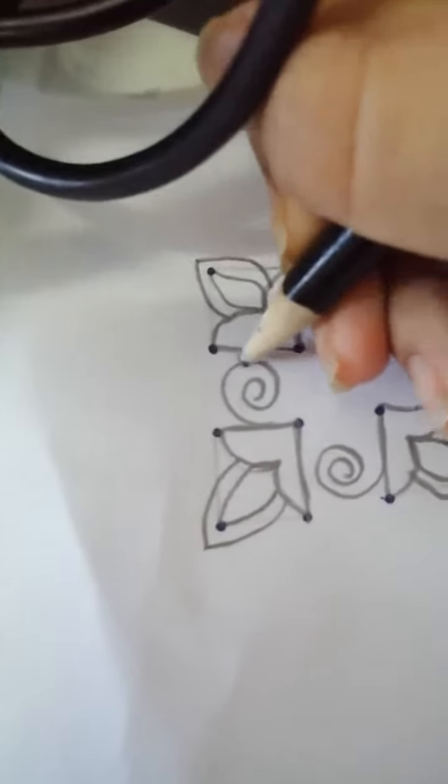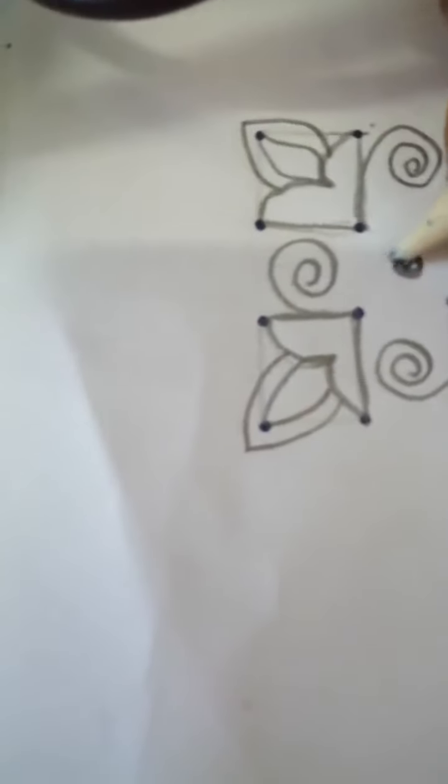Then it's like a flower, right? So now there is one gap. Leave that like that only, then you can put one dot, big dot here.